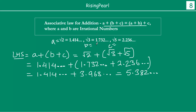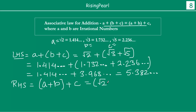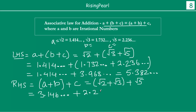So the left hand side, if A, B and C are square root 2, square root 3, and square root 5 respectively, then A plus B plus C gives 5.382... Now let us take a look at the right hand side. Right hand side is within bracket A plus B, bracket close, then plus C. So this means within bracket square root 2 plus square root 3, which gives 3.146, plus square root 5, which gives 2.236, and you will get 5.382.